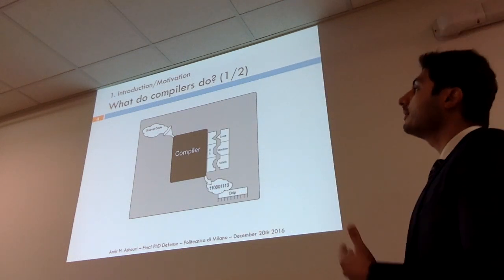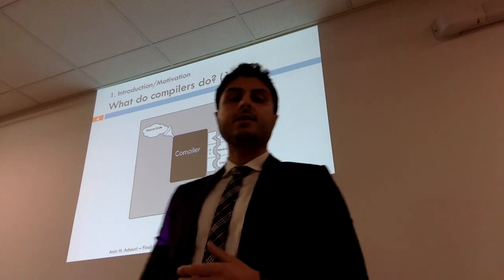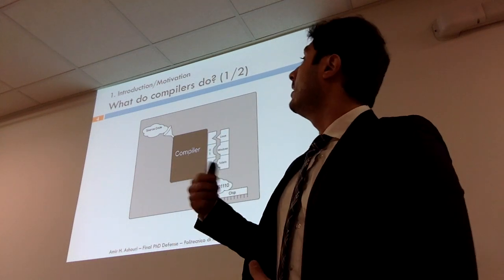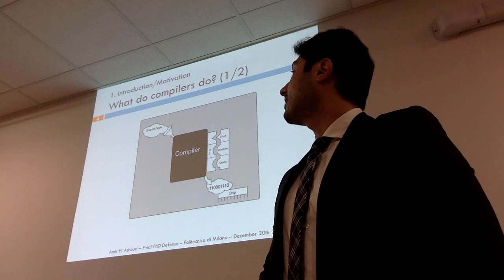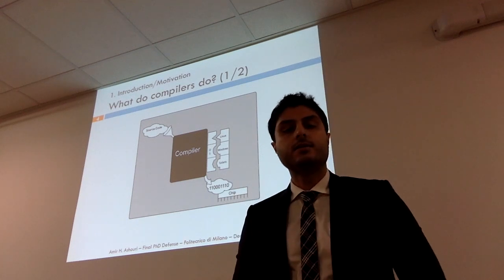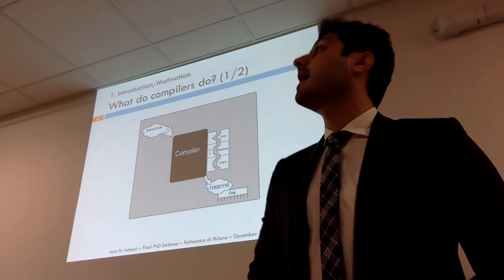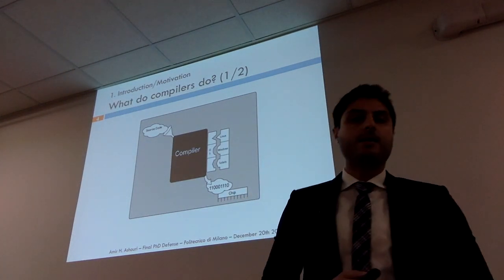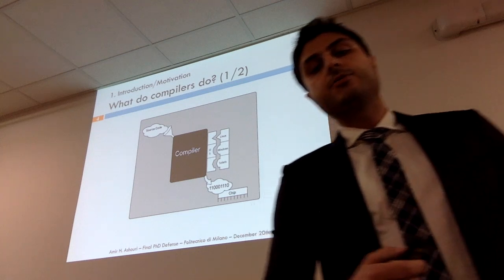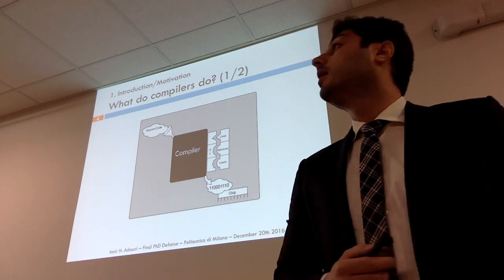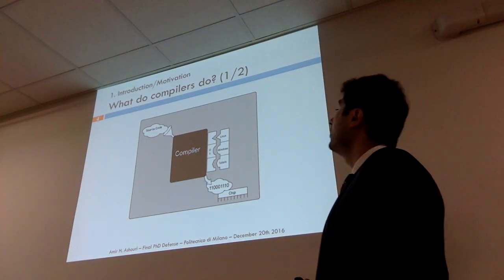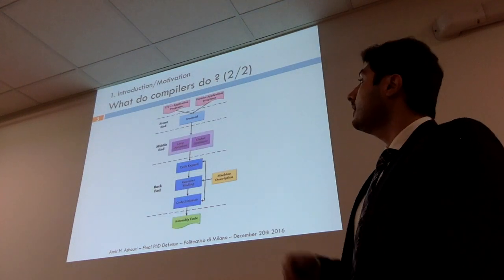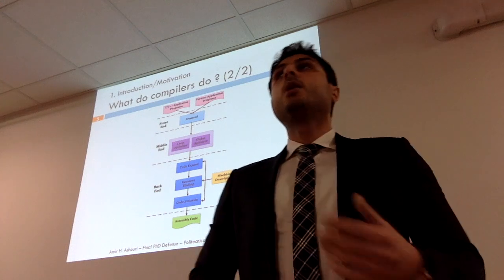I'm pretty sure all of you are familiar with the compiler. If you want to look at the compiler as a black box, the compiler is a module between the application side and the hardware side, so we input the source code and it transforms it in a way that the machine or chip beneath it can understand — the binary code. We have different compilers for different OS systems.